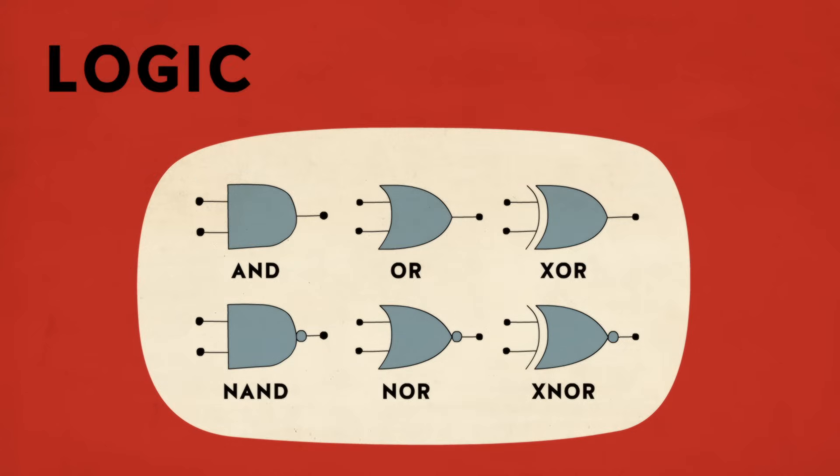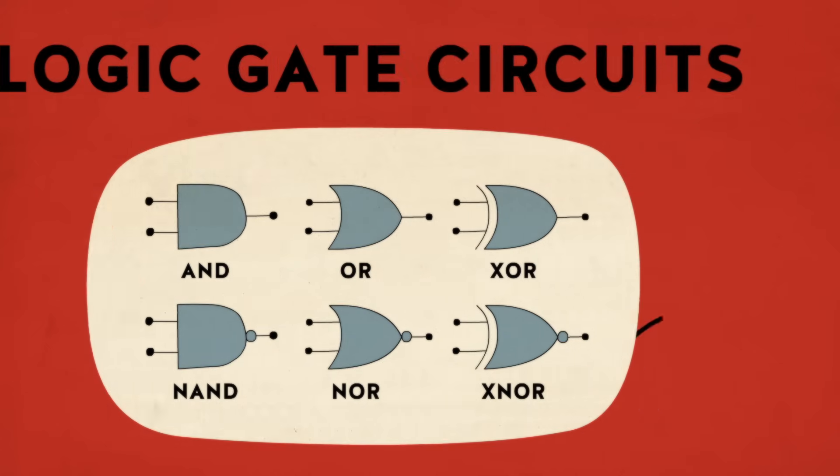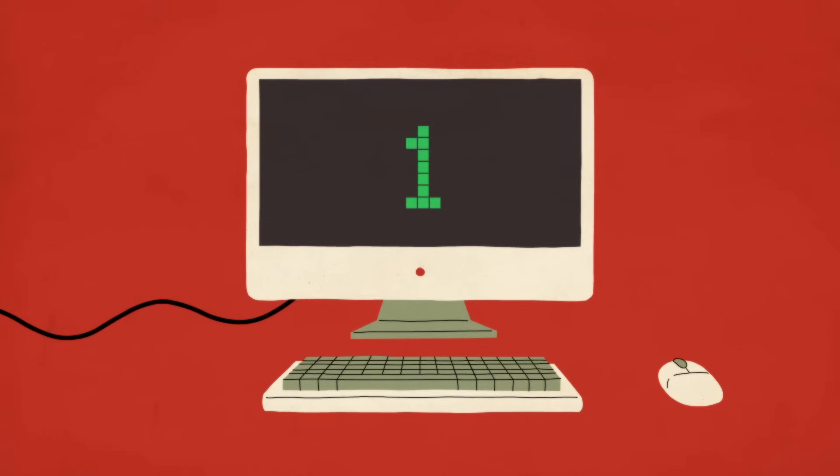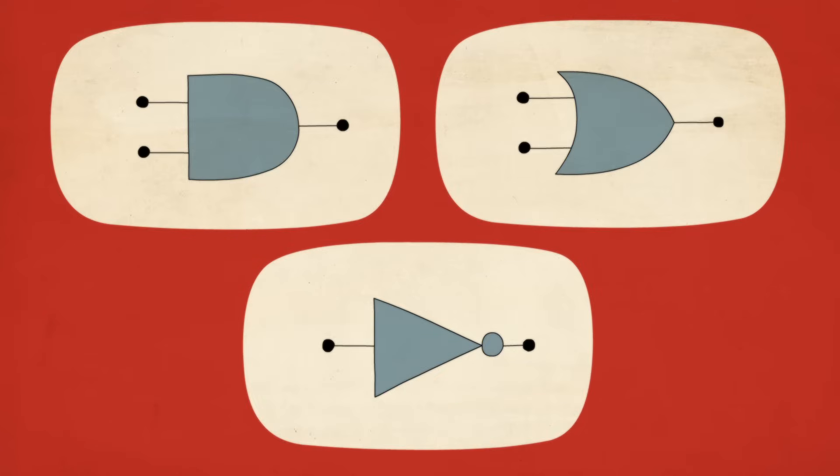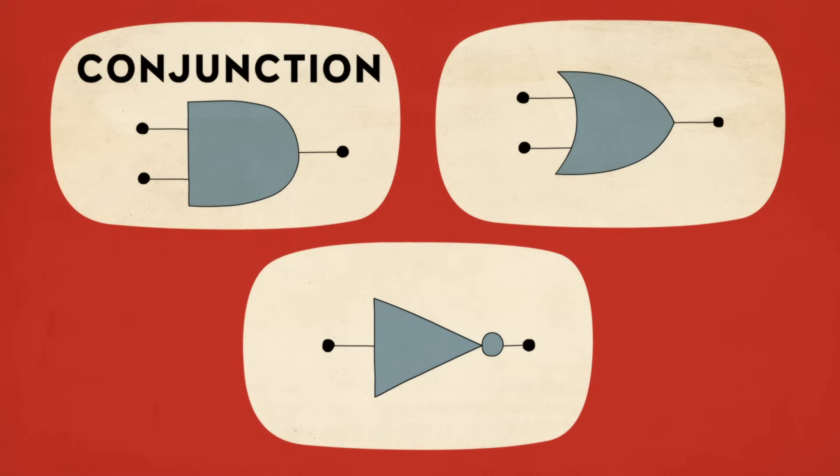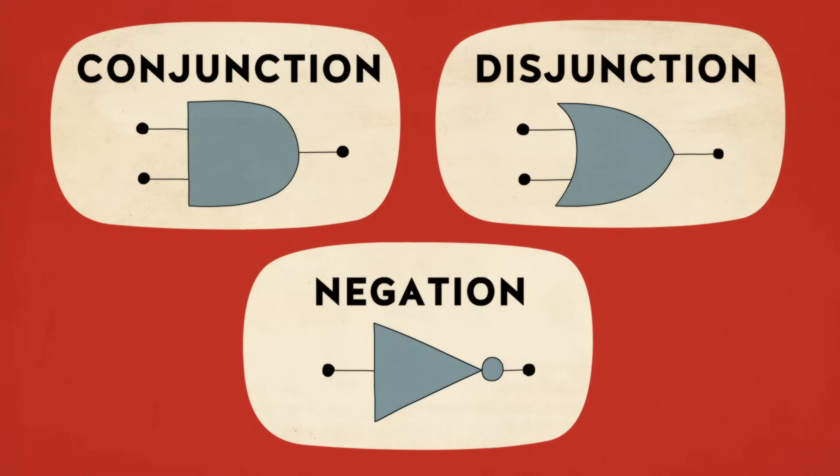Equations are implemented via logic gate circuits that produce an output of 1 or 0, based on whether the inputs satisfy a certain logical statement. These circuits perform three fundamental logical operations—conjunction, disjunction, and negation.